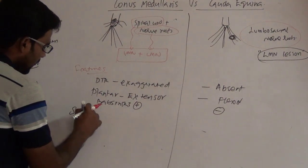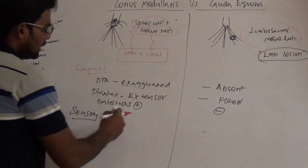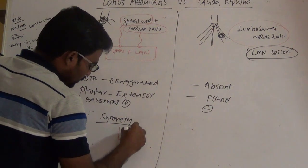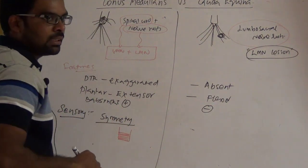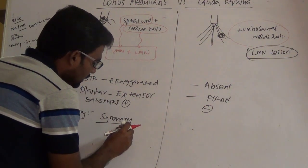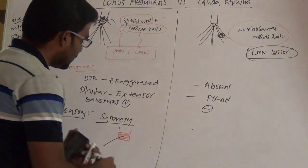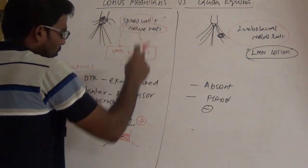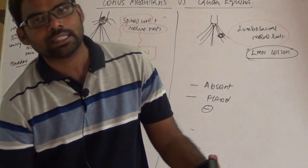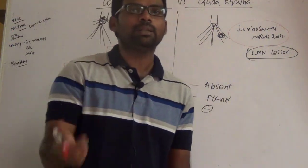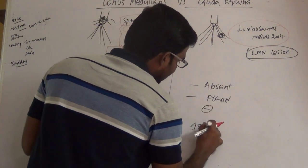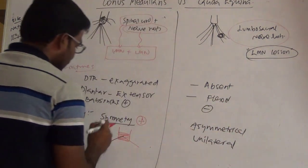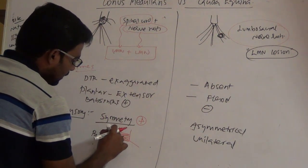Regarding symmetry: in conus medullaris, the spinal cord proper is involved, so clinical manifestations appear on both sides — the presentation is symmetrical and bilateral, affecting both limbs equally. In cauda equina, the presentation is asymmetrical and usually unilateral, depending on which nerve roots are involved.